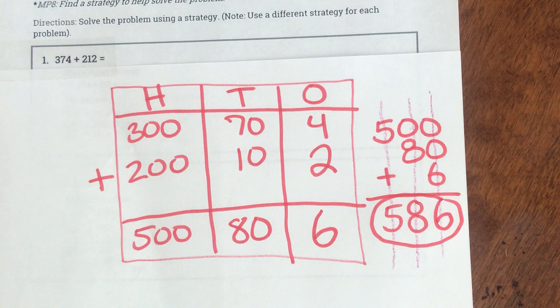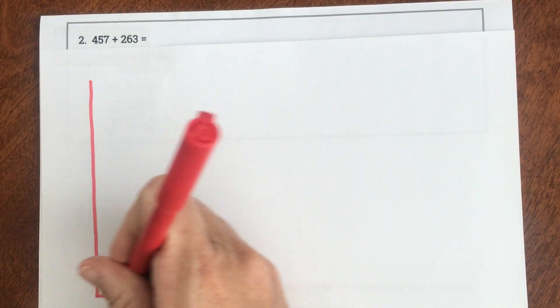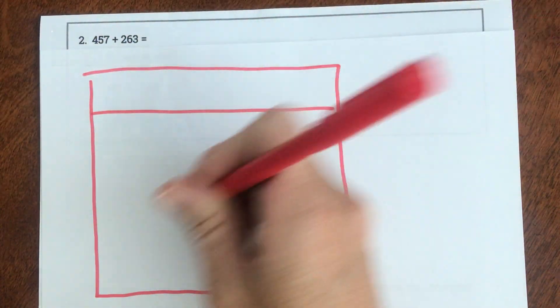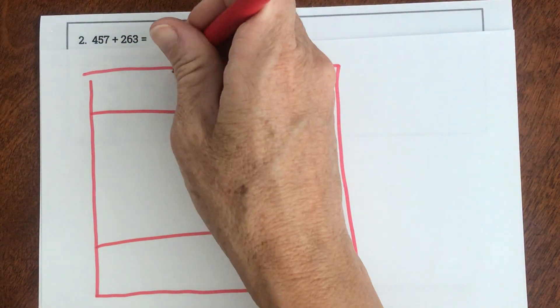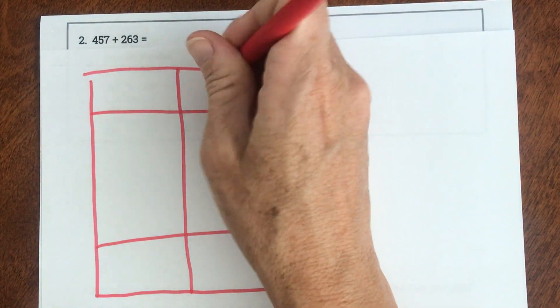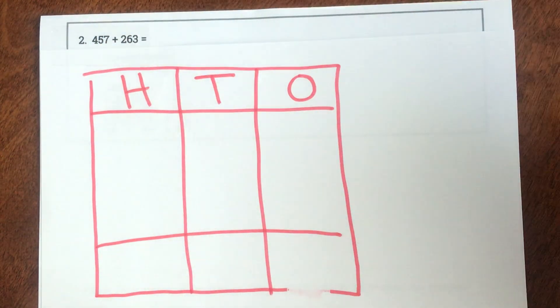I'm going to do one more of those boys and girls before we do some together. Here is my next problem. It's 457 + 263. So before I get started, I'm going to draw that place value map. And what do I have? My ones, my tens, and my hundreds.